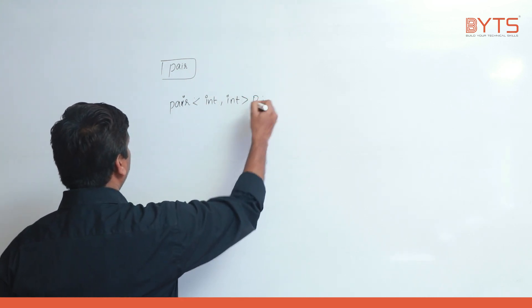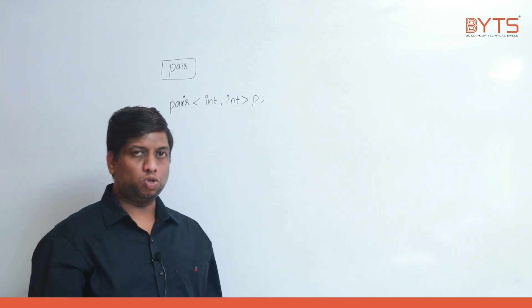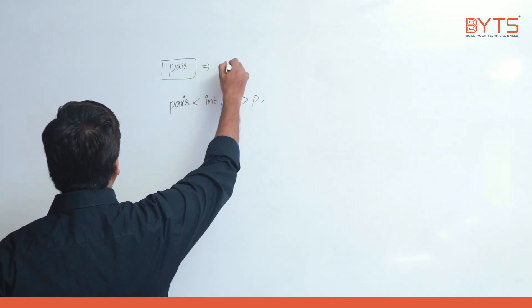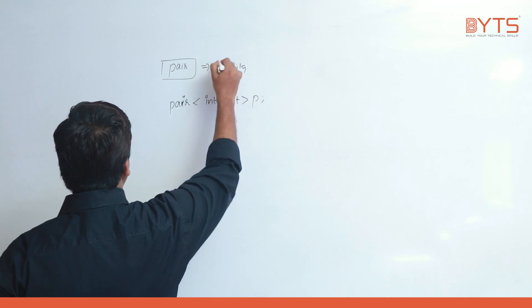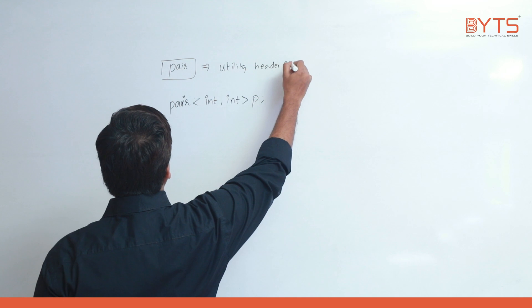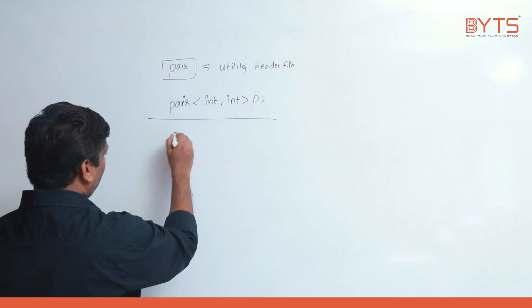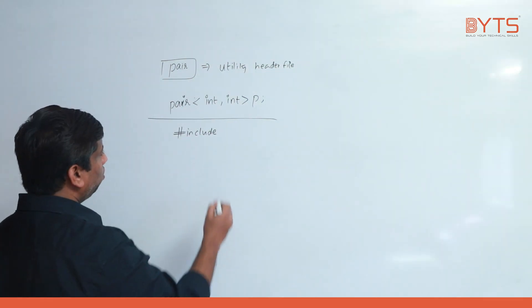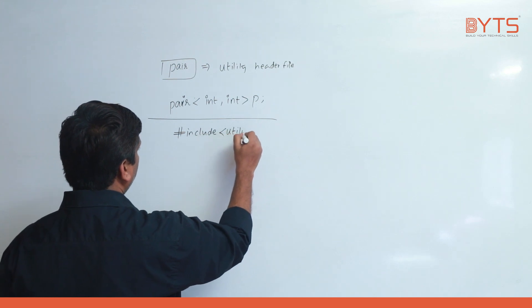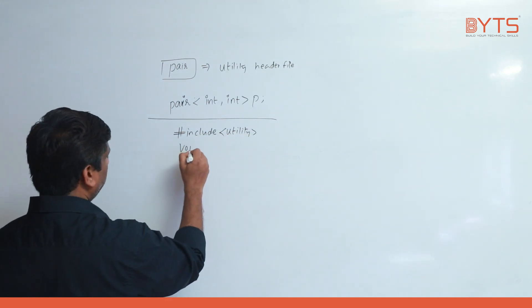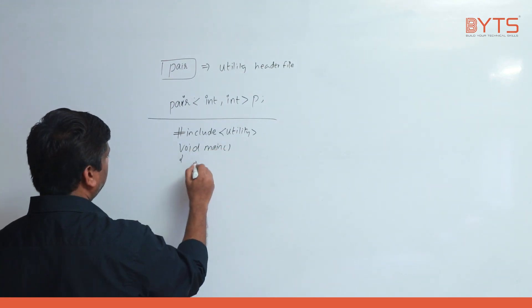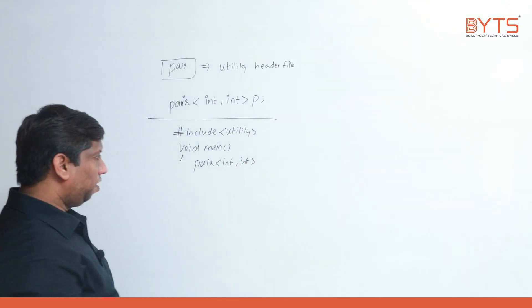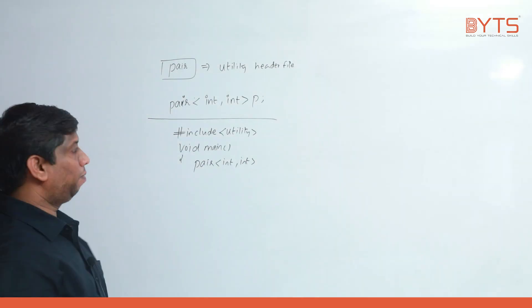Now you need to create p — we are creating a pair object, so p can hold two values. To work with pair you need to use one header file called the utility header file. So let me write the code: #include utility. Now I will create a pair — void main — pair<int, int>. The meaning of this statement is we are creating a pair of integer, integer type p.